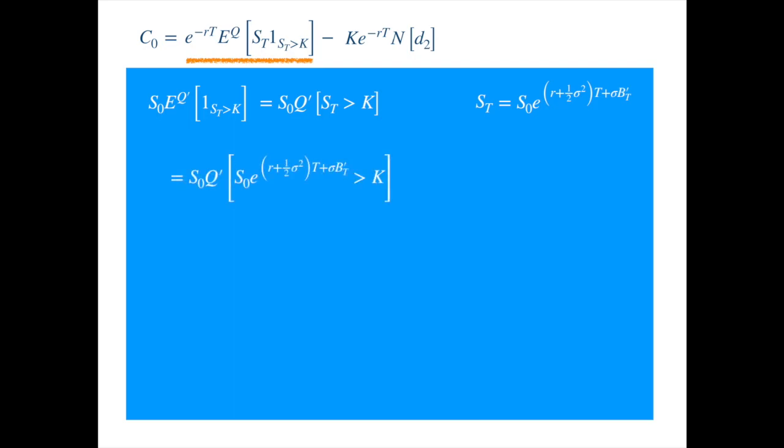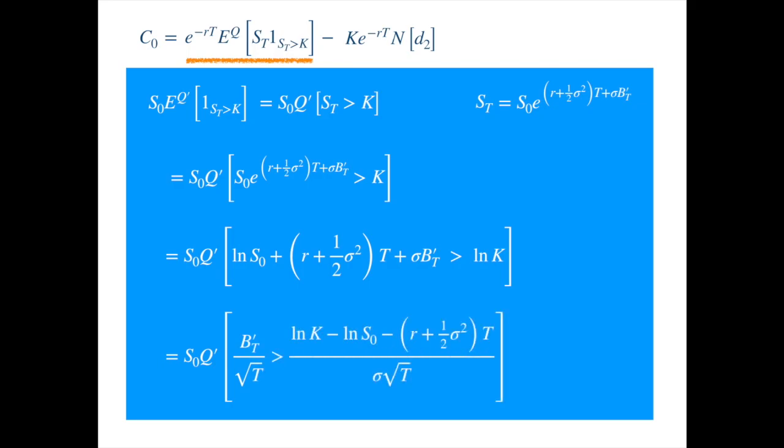Taking log of both sides, we get... Isolating the Brownian motion on the left-hand side, and dividing by the square root of time, we get the probability of our standard normal.